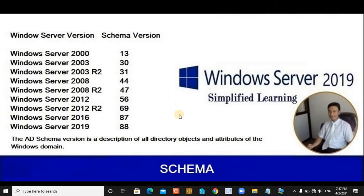The main reason is that every server family operating system has a schema version. This schema version is simply a description of all your Active Directory objects and their attributes — it's a kind of blueprint for your Active Directory objects. In Server 2016, the object attributes are defined per that schema version, and Server 2019 has a completely different schema version.